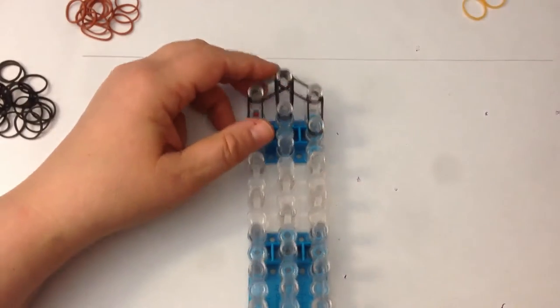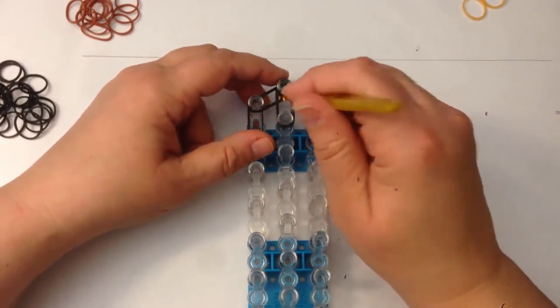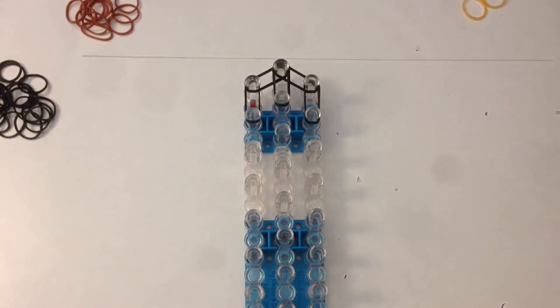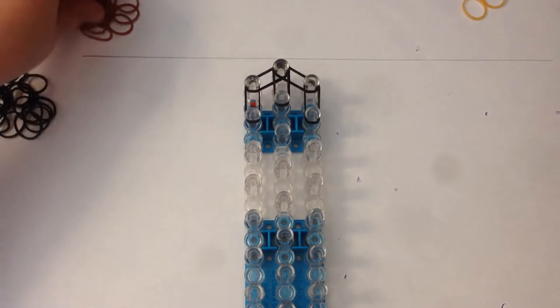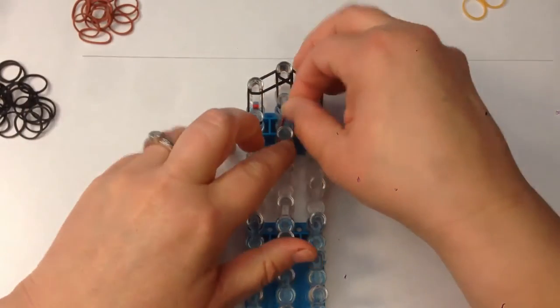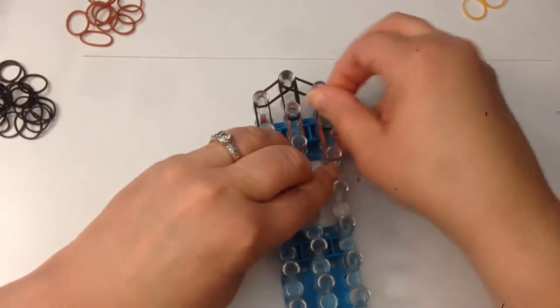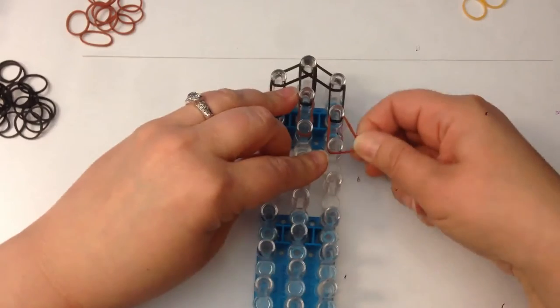You're probably also going to need an S clip or a clip of some sort and a couple of pony beads for eyes. I'm using the black mini pony beads. I find those are quite good at the moment for doing eyes. So we'll get started here. Make sure you push everything down on your pegs.